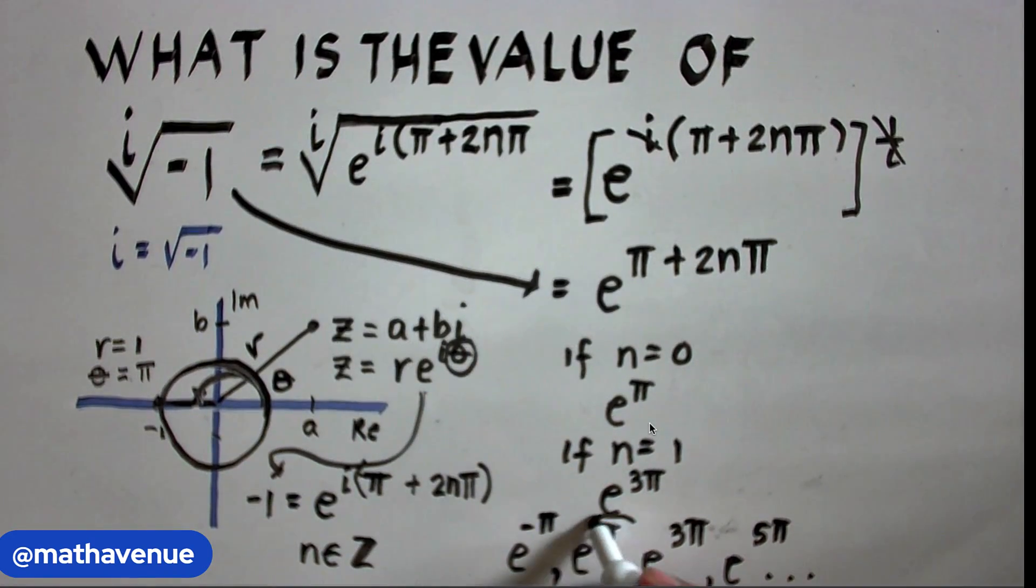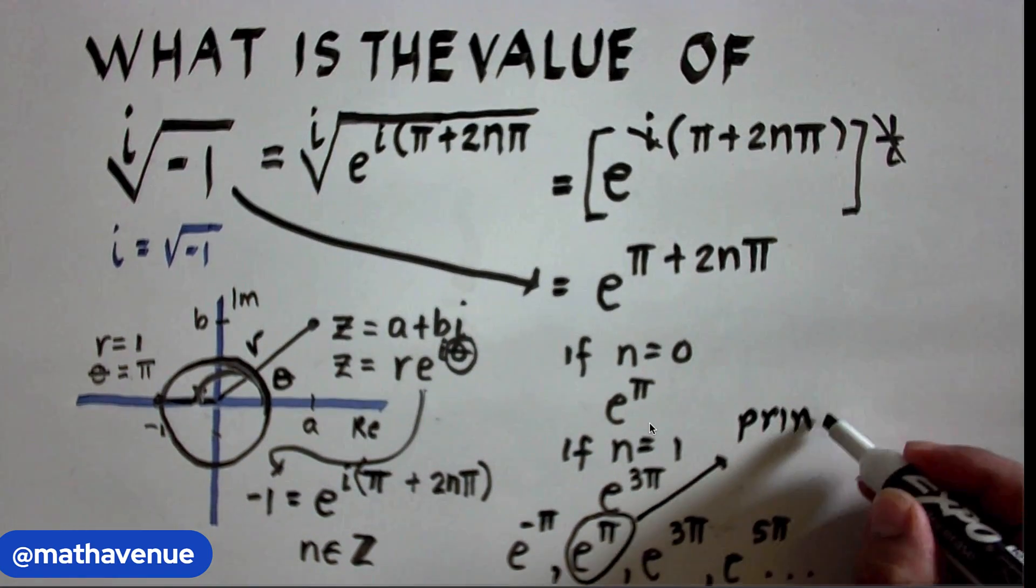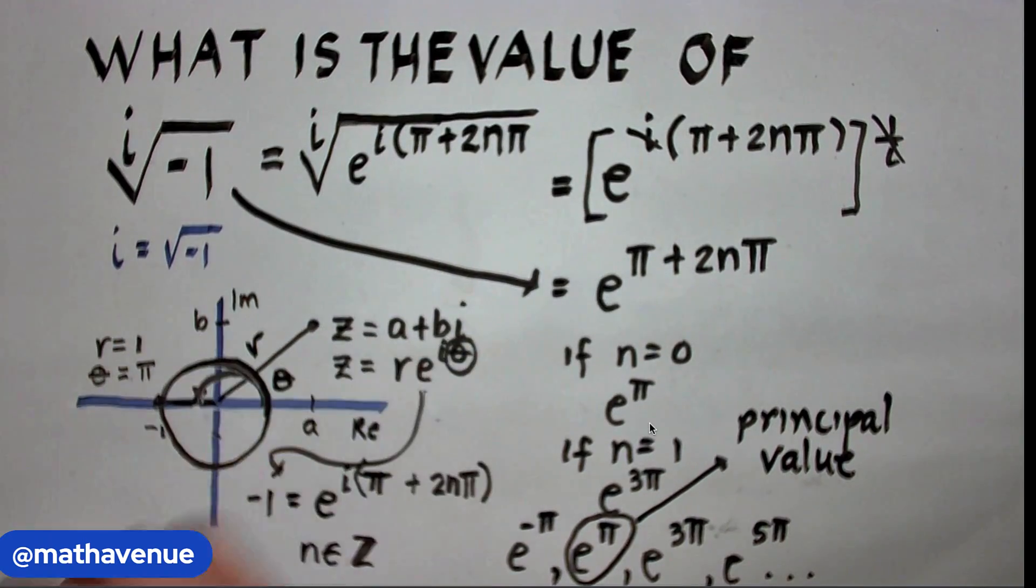But, this part here, e^π, is called the principal value. So, this is now our solution to this problem.